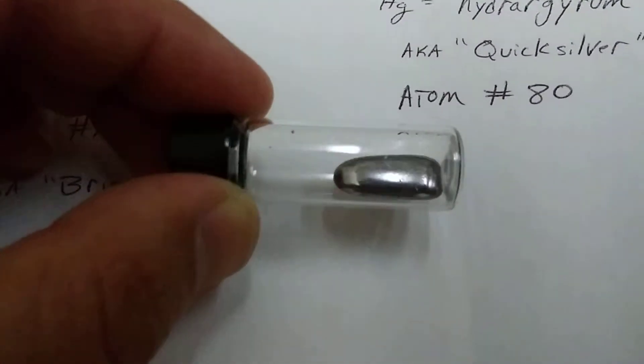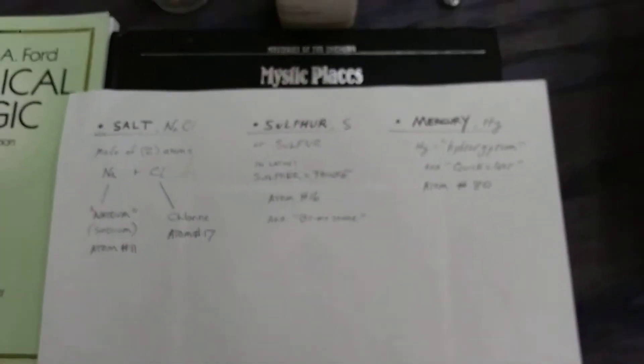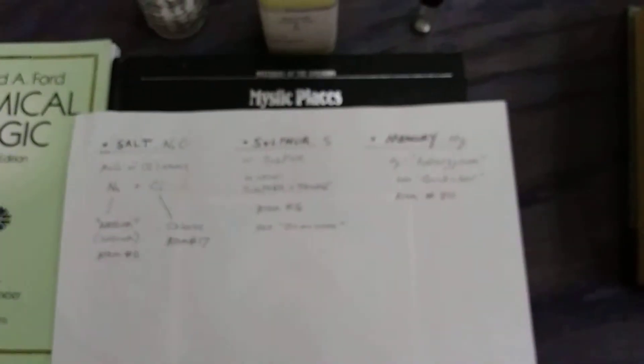So those are our chemicals and the chemical definitions of those words. Now let's study the alchemical definitions. In the alchemical sense, the word salt represents the body of something, the word sulfur represents the soul of something, and the word mercury represents the spirit of something.